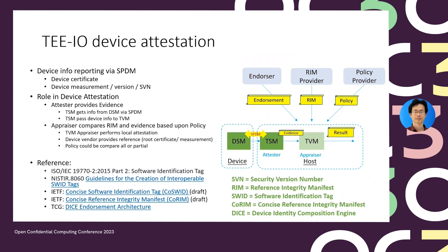The figure on the right-hand side shows the whole picture for device attestation. The host-side TSM acts as a tester to collect the device certificate and measurement and pass them to the TVM. To verify the data, the TVM needs to get the endorsement from the endorser, the reference integrity manifest from a RIM provider, and the appraisal policy from the policy provider. For example, the endorser could be the device vendor or OEM, and the endorsement could be a root CA cert used to verify the device certificate chain. The device vendor can also provide the RIM — that is, the expected device measurement. If the collected measurement matches the RIM, the device is as expected.